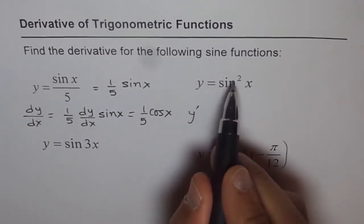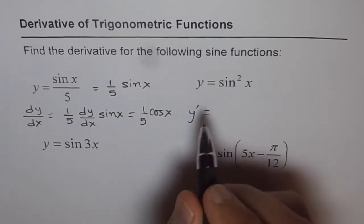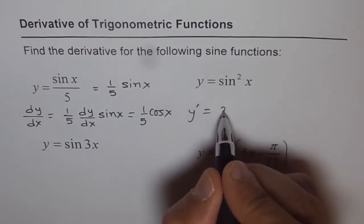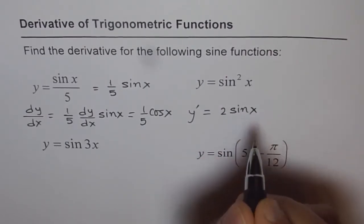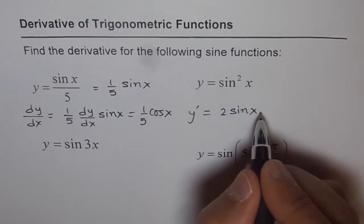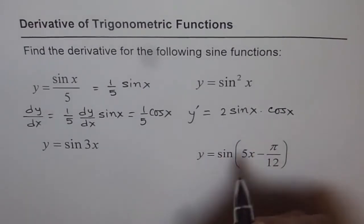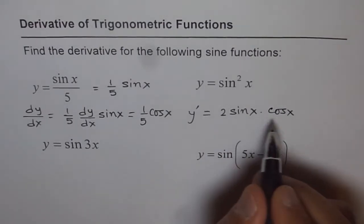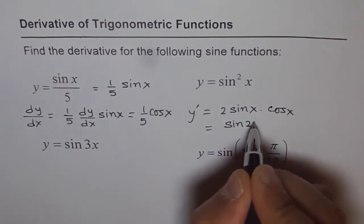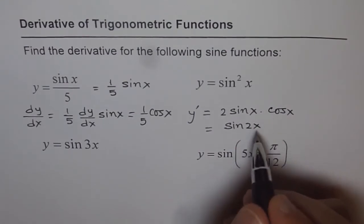We have y equals sine squared x, so what is dy/dx? By the power rule, dy/dx equals 2 times sine x, and then the derivative of sine x, which is cos x. So we get 2 sine x cos x. You can simplify this and write it as sine 2x, since 2 sine x cos x equals sine 2x. But either way, it's correct.